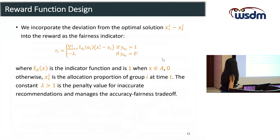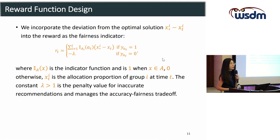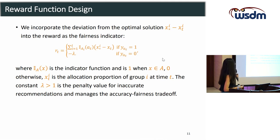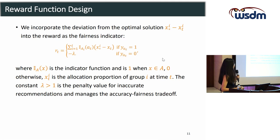The reward function is straightforward because only the user's desired activity can affect the fairness metric. We give a negative reward if Y_A_T equals zero, meaning the user is unsatisfied with the recommended item. If Y_A_T equals one, meaning the user performs the desired activity, we compute the fairness indicator — the deviation from the optimal solution x*_i minus x_t_i, where i is the current item group. The reward is positive if the current group is underrepresented and needs more promotion; otherwise it is negative, meaning the current item group is already overrepresented and we should focus on currently underrepresented groups.